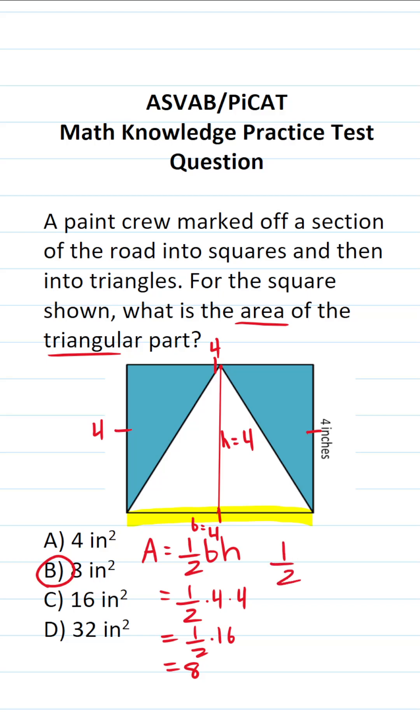Now, if you couldn't do one-half times 16 mentally, and I know some of you are just starting to study for the ASVAB and PI-CAT for the very first time, what you would do is write 16 as a fraction by placing it over one.